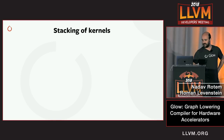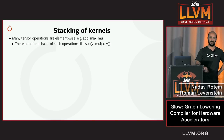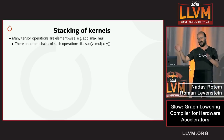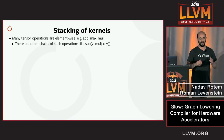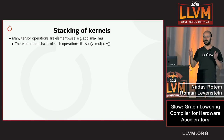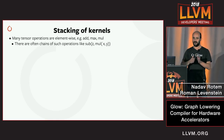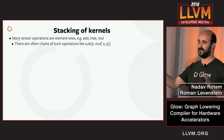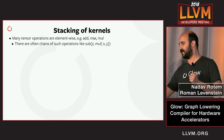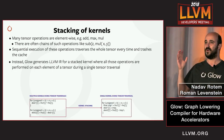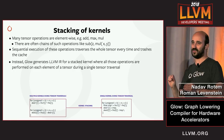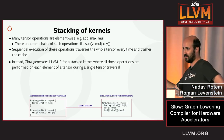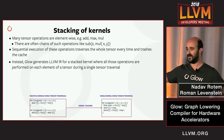One of the Glow-specific optimizations is the stacking of kernels. Many operations in neural networks are element-wise — element-wise multiplication, subtraction, addition — and often you have chains of such operations on tensors of the same shape. If you do this sequentially, you trash your cache because you do multiple traversals of the tensor. Instead, Glow generates a stacked kernel where all those operations are performed on each element in one tensor traversal. As you can see in the pseudocode, this is essentially a loop fusion optimization.